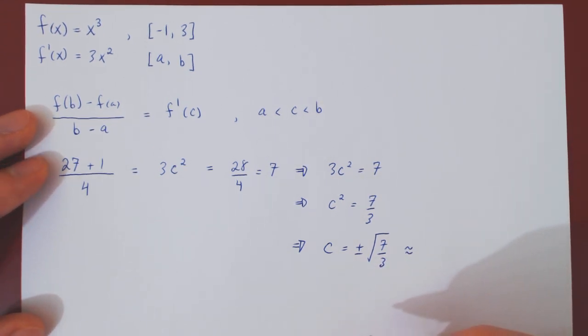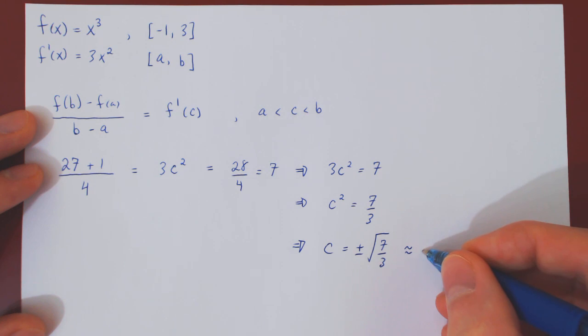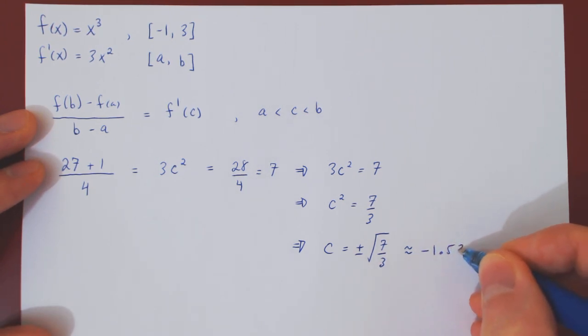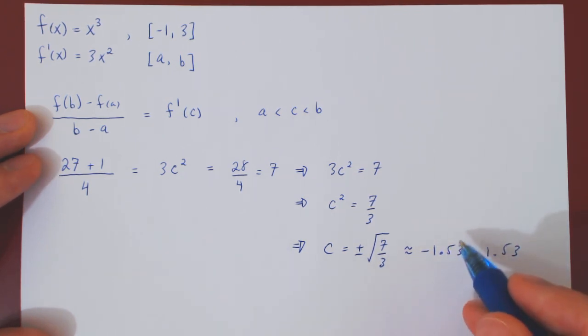In decimals, this will give us the negative solution about negative 1.53, and the positive solution about 1.53. So we have here, algebraically, two values of c.